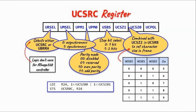As an example, we program register C for asynchronous communication, no parity coding, one stop bit, and 8-bit character size. The resulting byte value is 0b00000110.